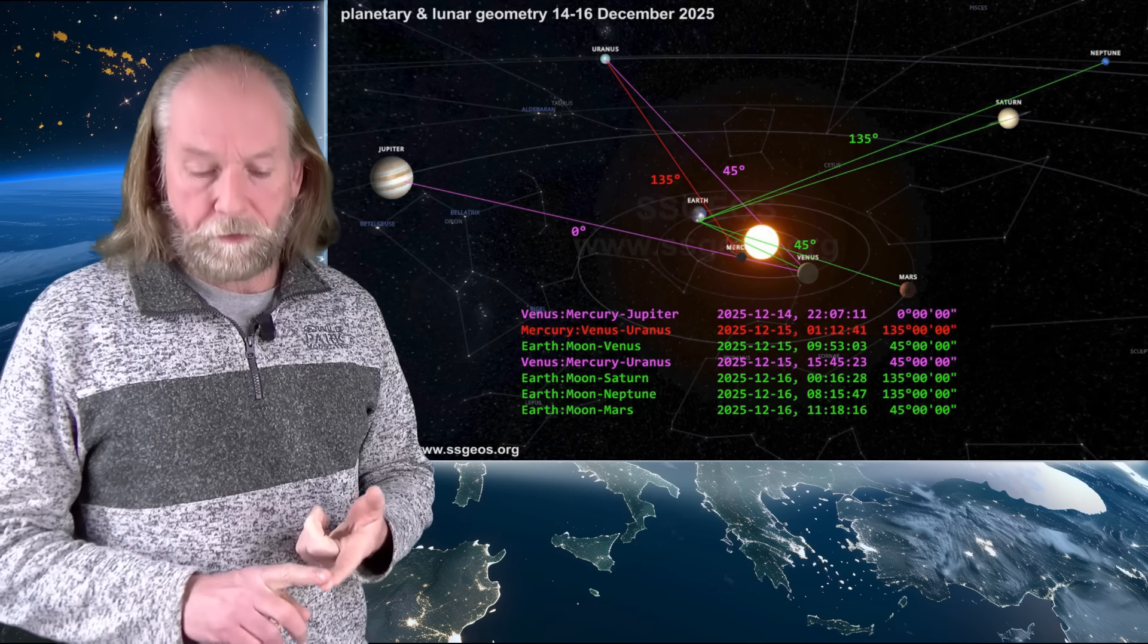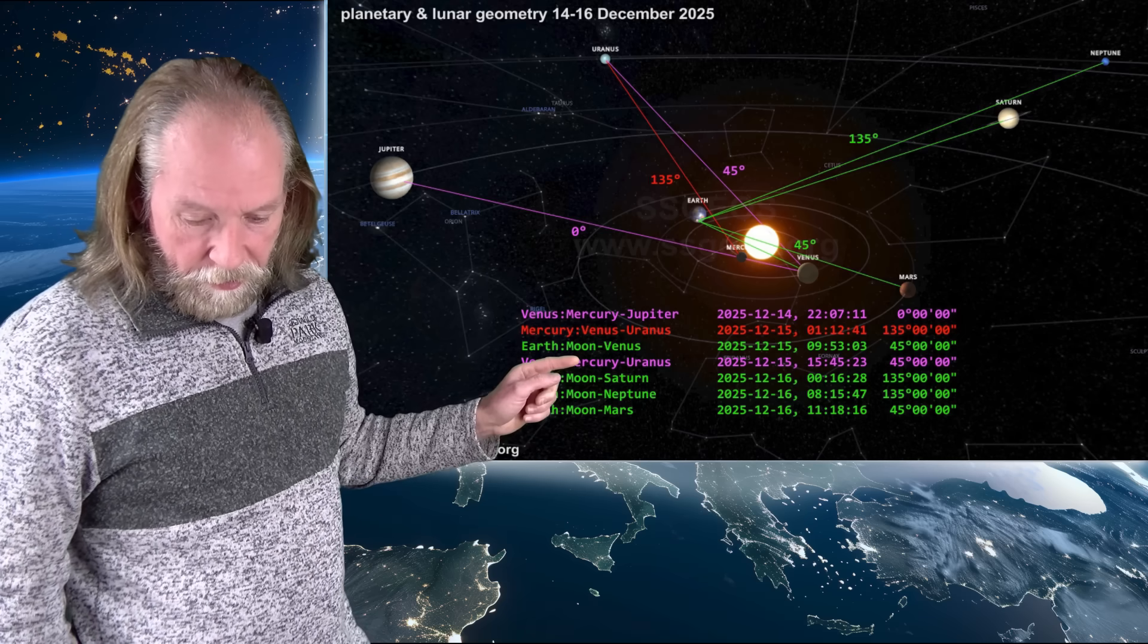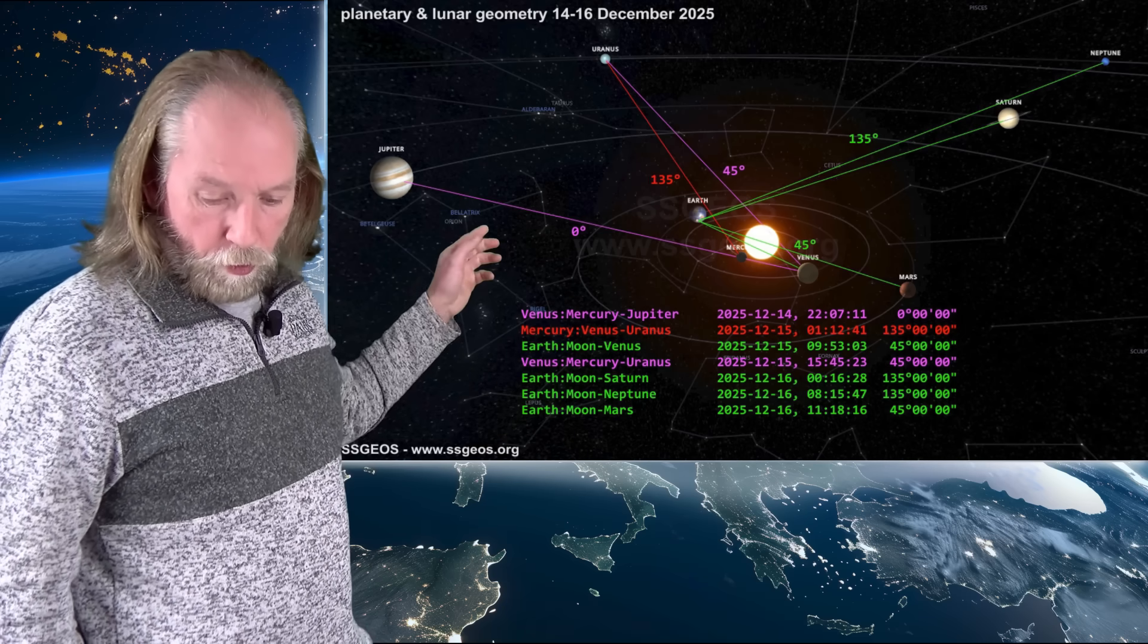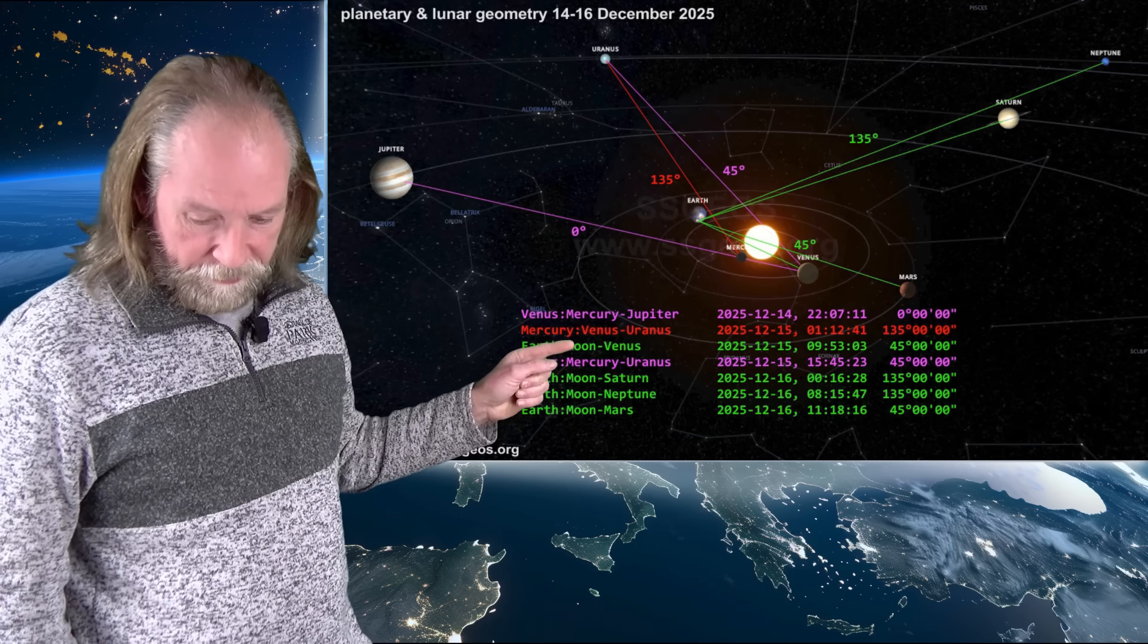We see that Venus, Mercury and Jupiter are in a conjunction on the 14th and Venus, Mercury, Uranus on the 15th. That's a 45 degree angle next to the paired Mercury, Venus, Uranus at 135 degrees.